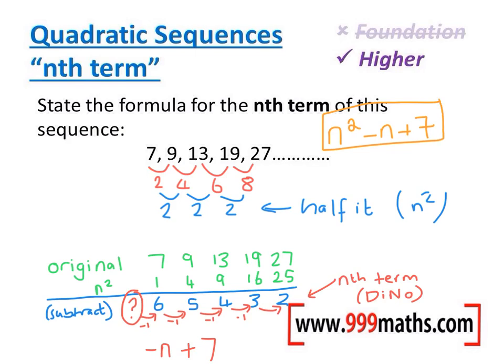Now to check it works, we can just substitute in one of our values. So let's say for the third term, we can do 3 squared, which is 9. Take away 3, that makes 6. Add 7 makes 13. And you'll see that the third term is 13. Again, for the fifth term, 5 squared is 25. Take away 5 is 20. Add 7 is 27. And that's what we've got.